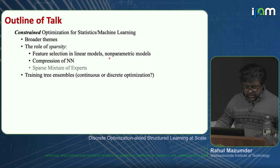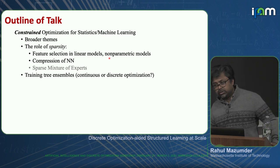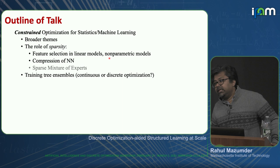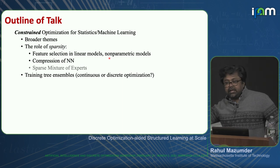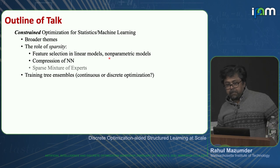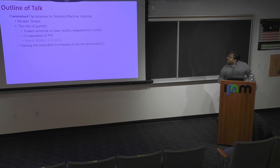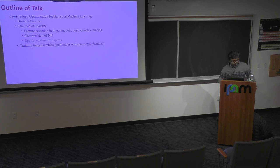I'll talk about extensions to non-parametric models — a term used a lot in statistics. This deals with an important problem: how do I do feature selection when the conditional expectation function is not linear in X? Some of these ideas, though developed in the context of classical statistics or machine learning problems, can with some modification be adapted to more modern problems, that is, compression of neural networks. I'll give a very brief overview of this later on.